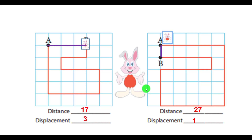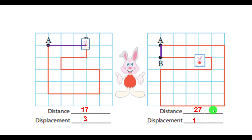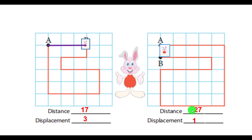Coming to the second path, the rabbit starts from point A again. Counting along this path, the total number of squares is 27. So the total distance traveled by the rabbit in this case is 27 square meters. But notice the displacement — it is only 1 square unit. So now I hope you are very much clear about the concept of distance and displacement.